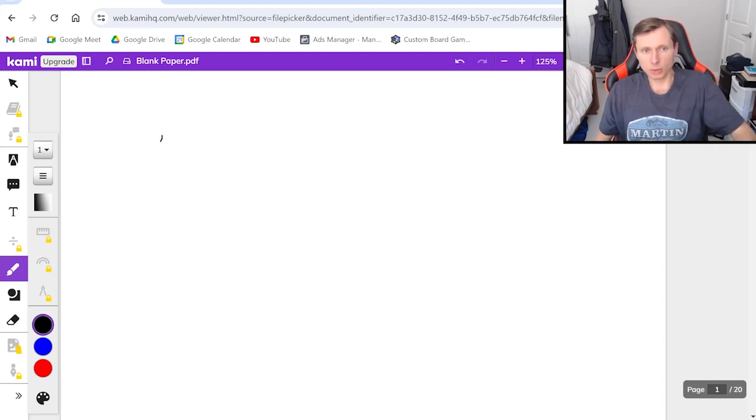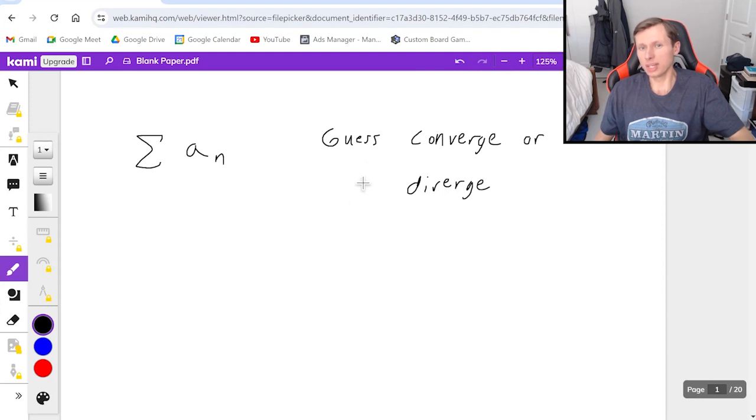So first you start with your series, doesn't matter where you're starting at zero, one, or whatever, or what your series is. The first thing you want to do is you want to guess whether the series is going to converge or diverge. There's no easy way to say converge or diverge. It really just comes with practice, and you'll get the hang of it after a while.